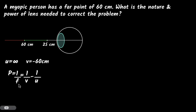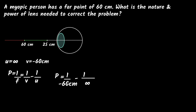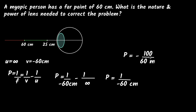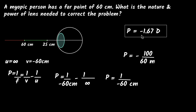Power equals one over F, and the lens formula says one over F equals one over V minus one over U. Substituting the values: one over minus 60 centimeters minus one over infinity. One over infinity is zero, so power is just one over minus 60 centimeters. Converting to diopters by dividing by 100 gives 100 on top, and the result is negative 1.67 diopters. The negative sign indicates the power must be for a diverging lens.